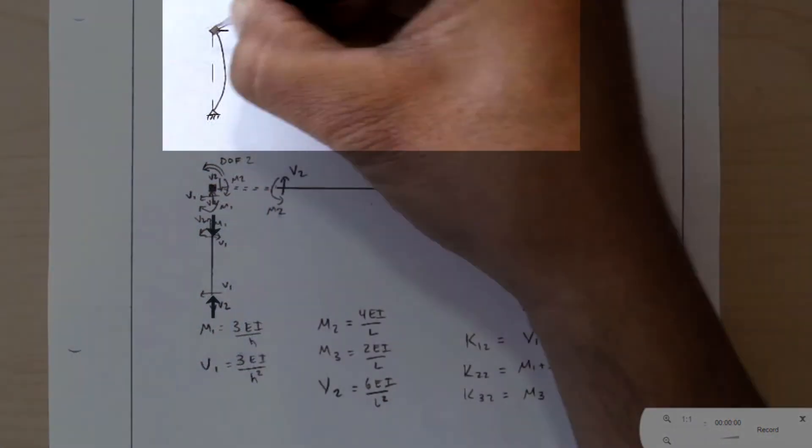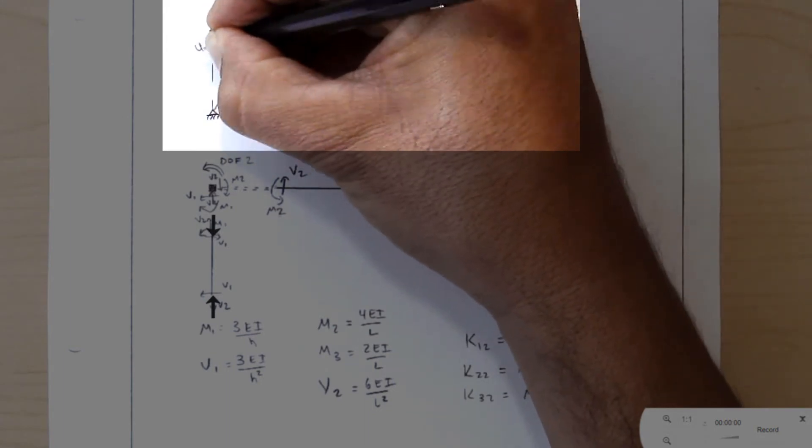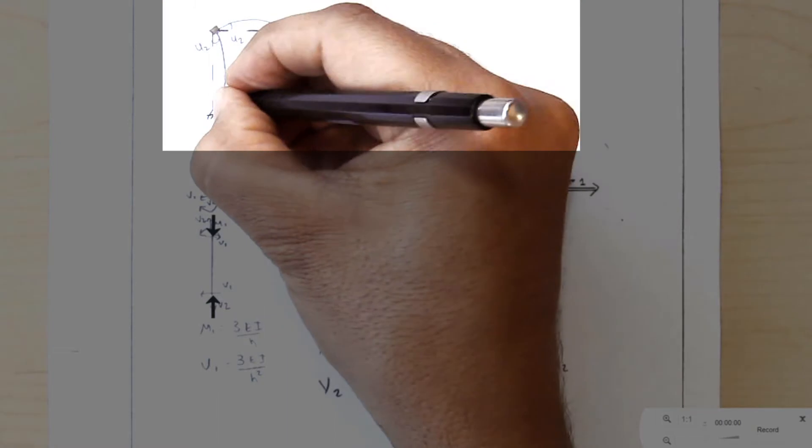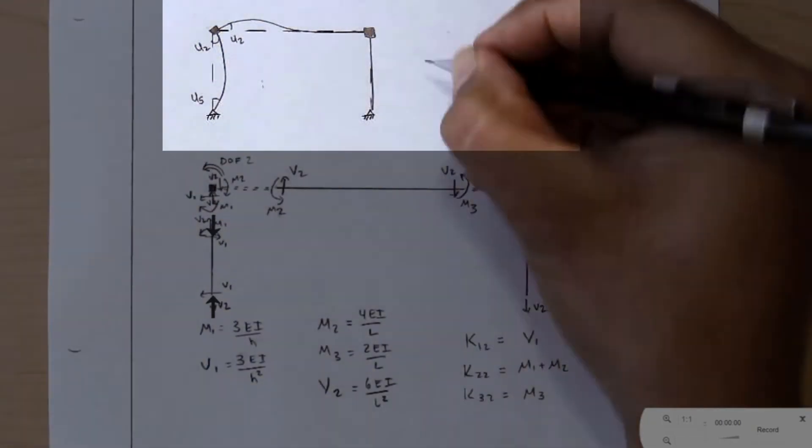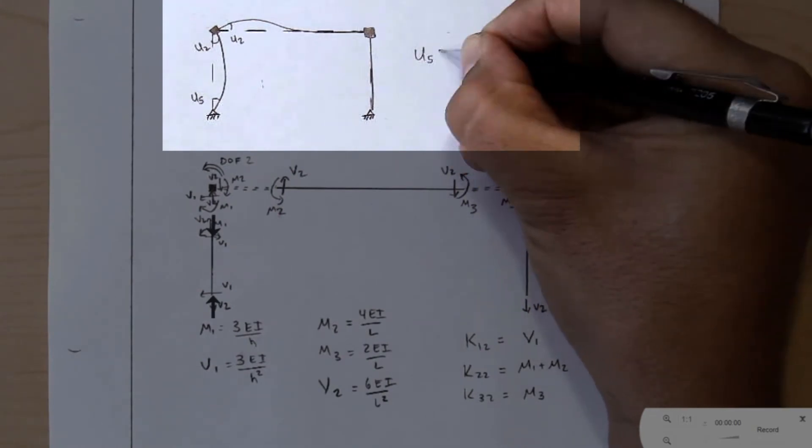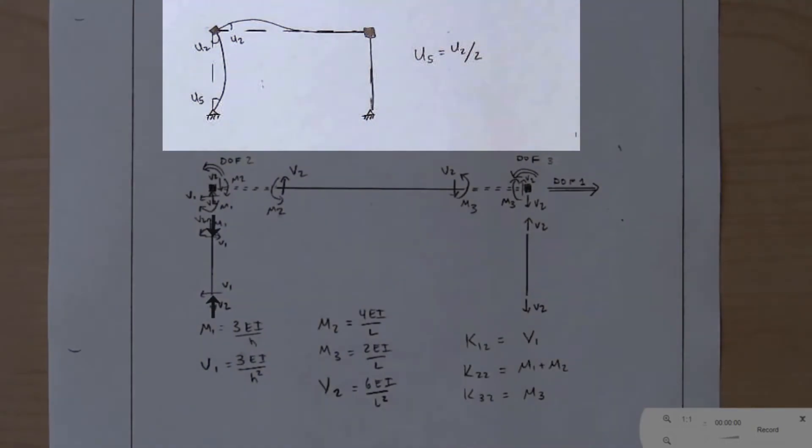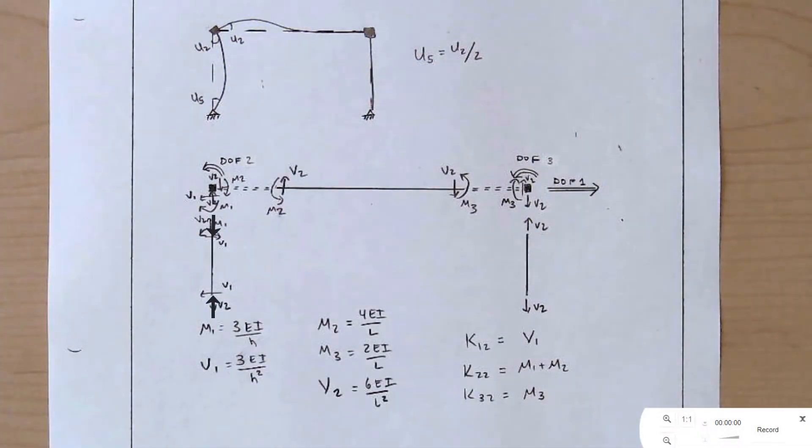Lastly, we'll just keep track of our displacements here. This is U2, the actual rotation of the degree of freedom. And down here, we need to keep track of this rotation here, which we've seen previously is equal to half the rotation that we've imposed. Again, we'll keep track of this for use in force recovery.